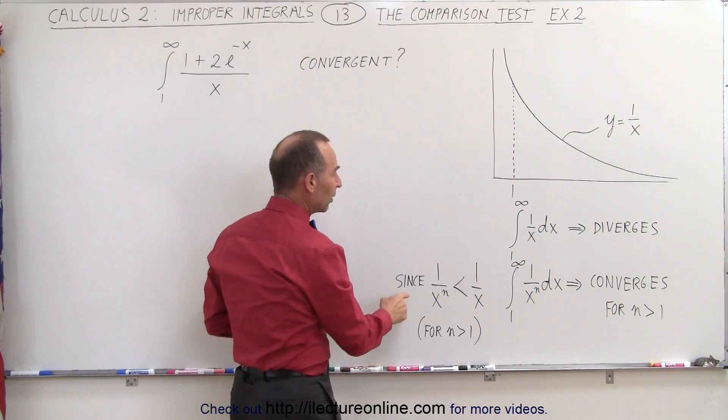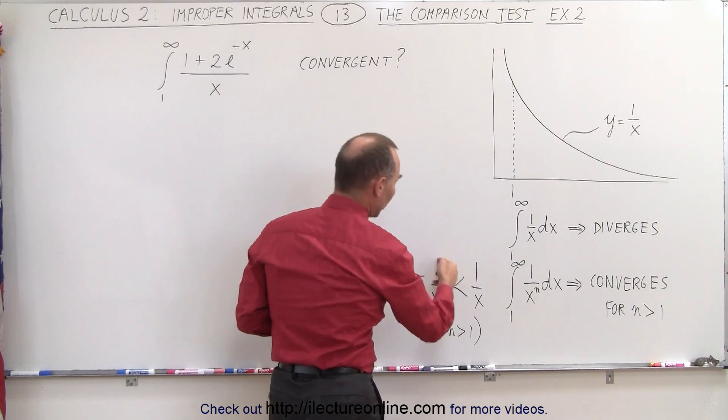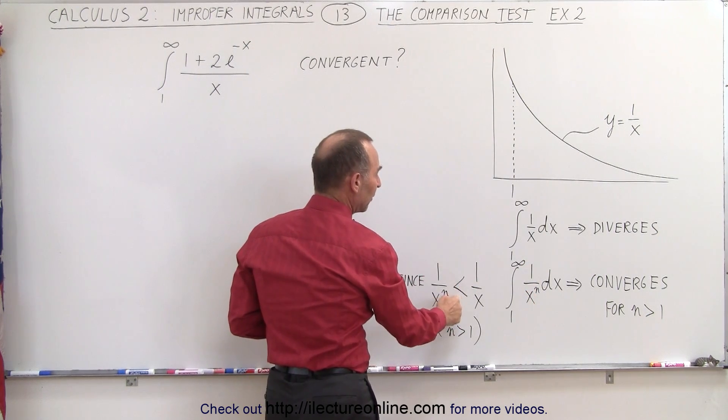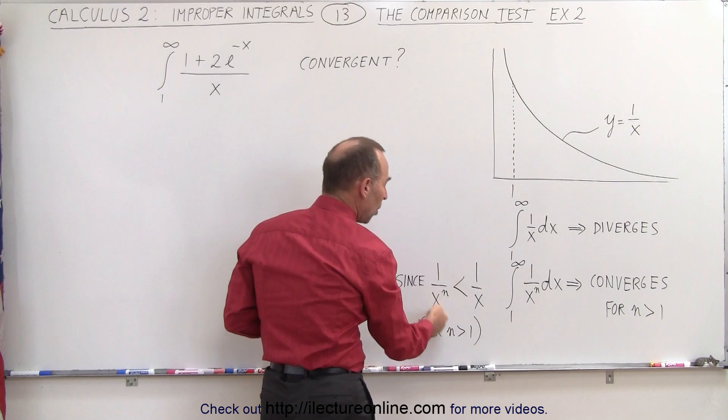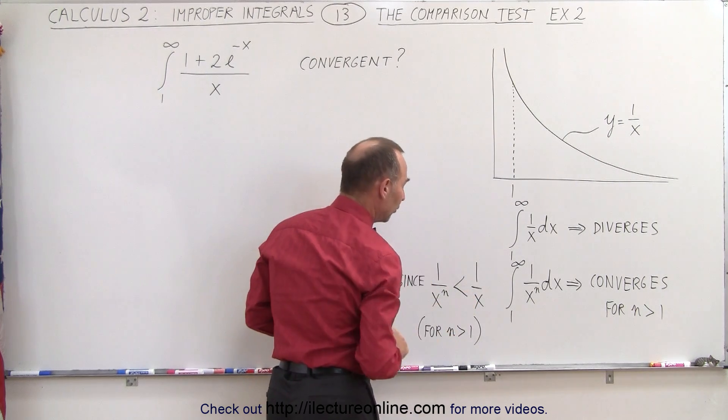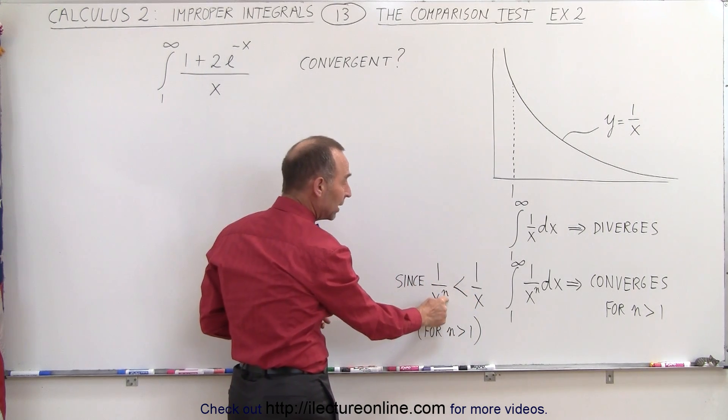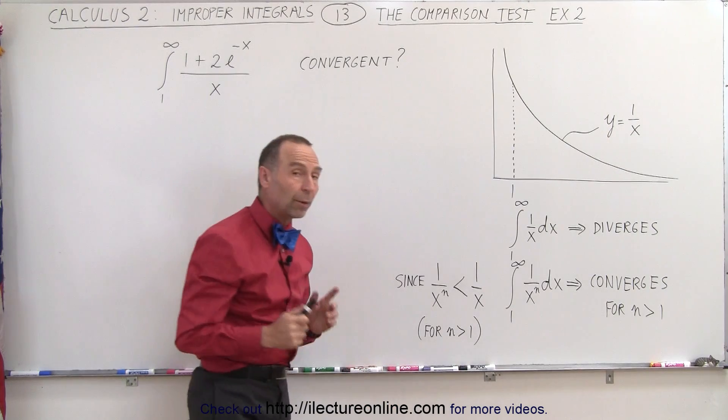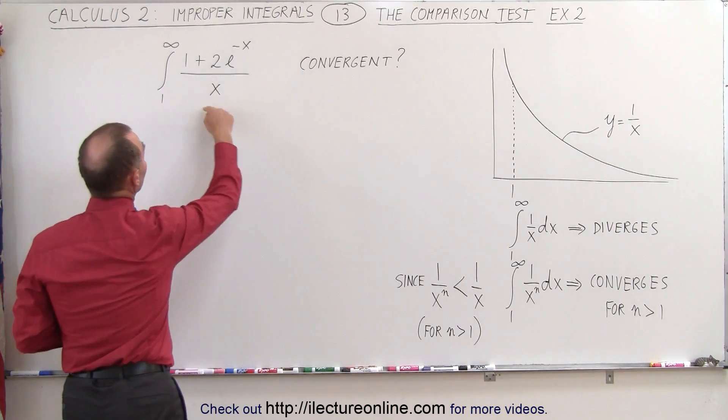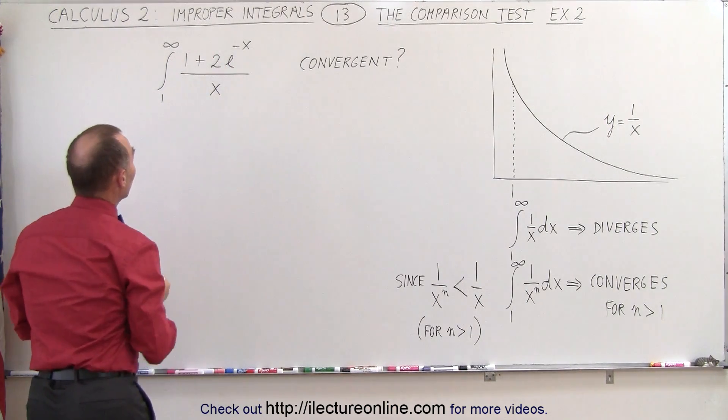So what we can do is we can compare the integrand 1 over x to the n and compare it to 1 over x, and if it's smaller than that, we know it converges, and that will be the case for n being greater than 1. So what we're going to do here is we're going to compare this to 1 over x and see what happens.